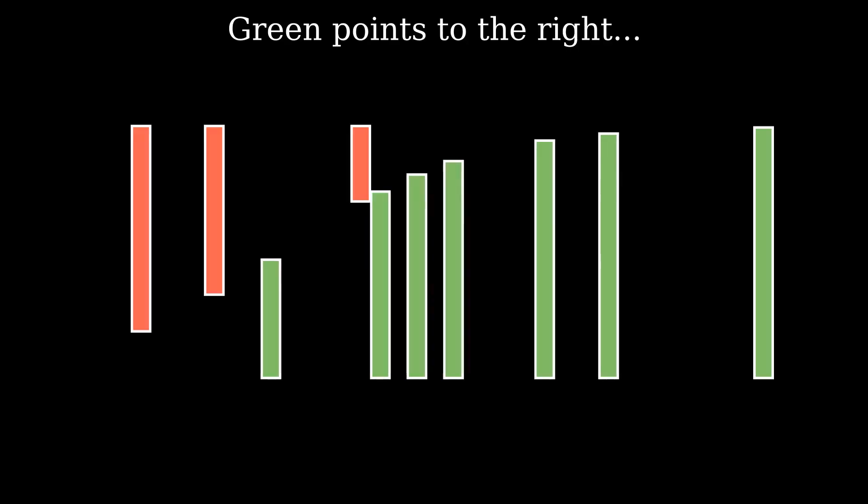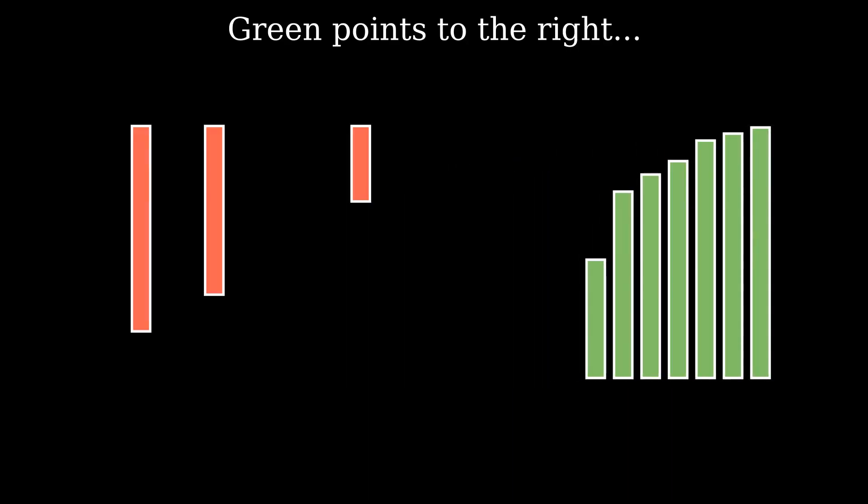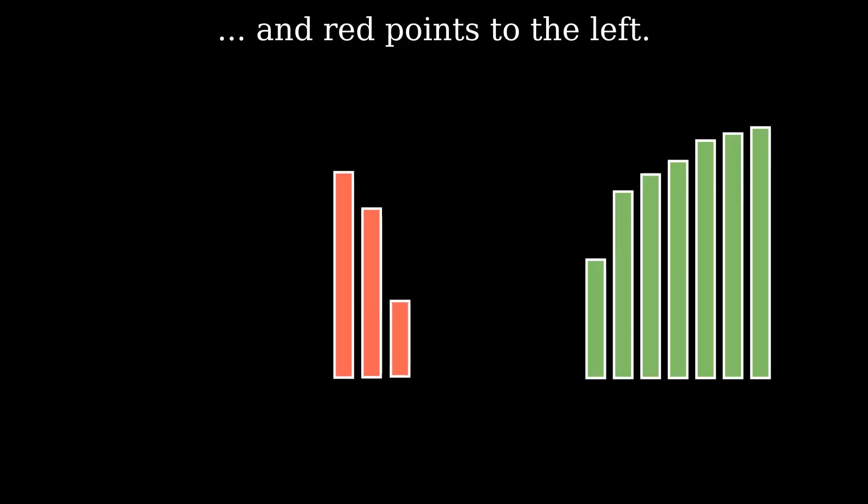Green bars, the probabilities of actual green points being green, go to the right. While red bars, the probabilities of actual red points being red, go to the left.